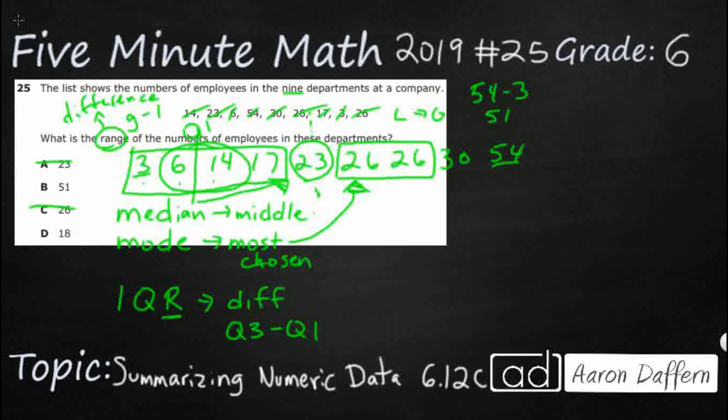So I'm going to say Q1 is 10, and then this second half has got these four numbers. Here's my Q3. You need to find this midpoint between 26 and 30, and that's going to be 28. So if you subtract 28 and 10, you're going to get this 18, but our answer is B51.